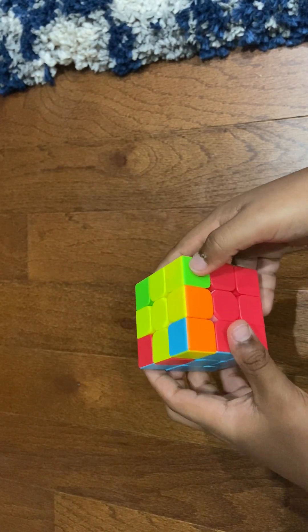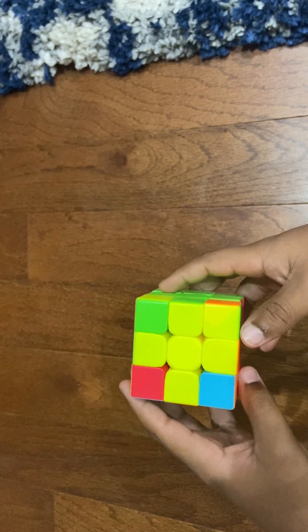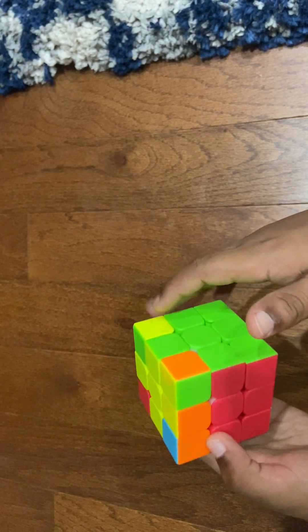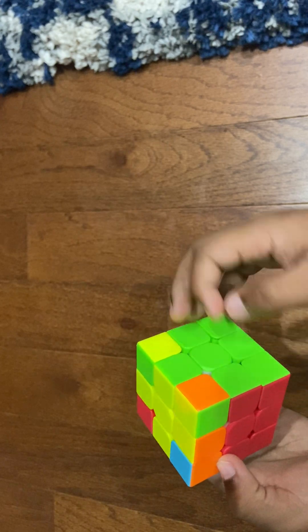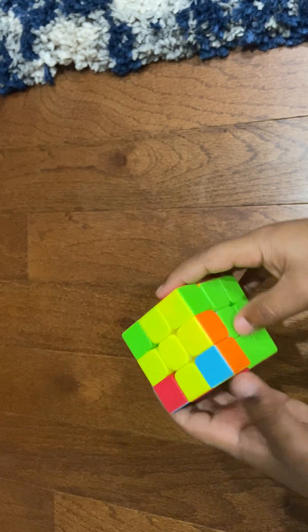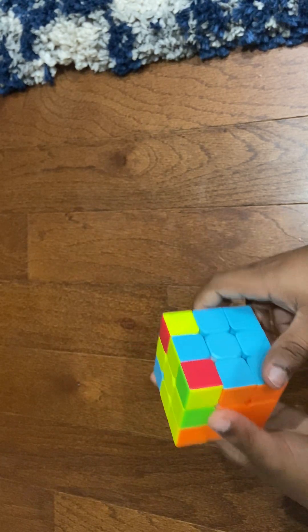Hi guys, welcome to part two of solving your Rubik's 3x3. Right now we're at this stage, the yellow cross. So right here we need all of these to go to the correct color.